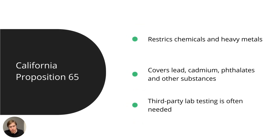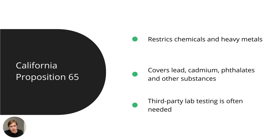Then we have California Proposition 65, a regulation in California that restricts chemicals and heavy metals in consumer products sold in the state. It's not the only state-level substance regulation, but it is the most well-known. Importantly, unlike CPSIA, California Proposition 65 is not age-group specific.